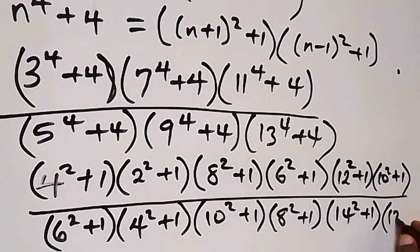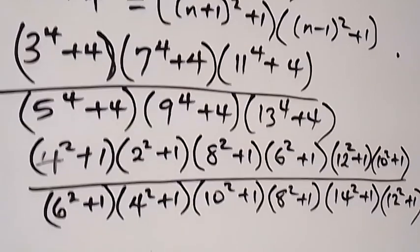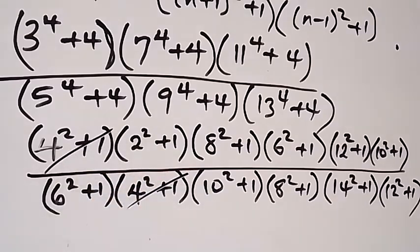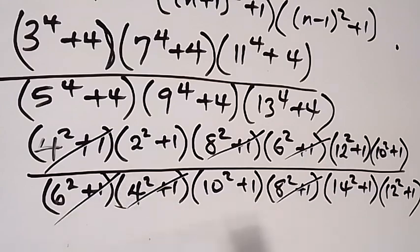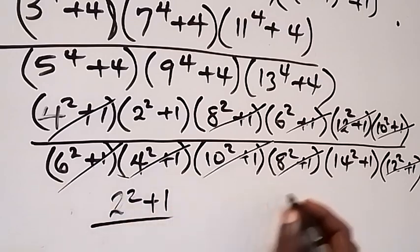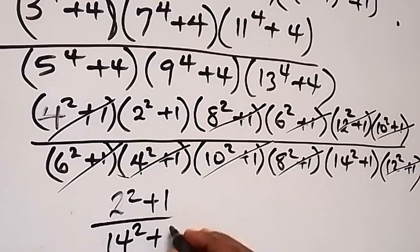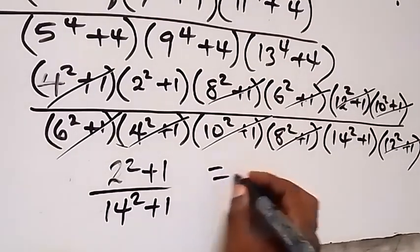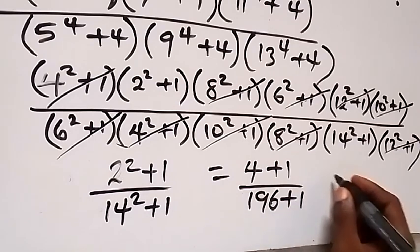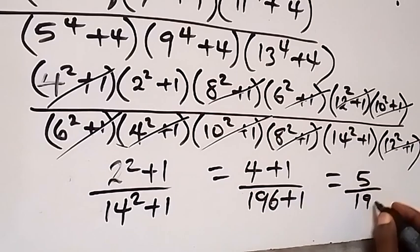Now we see that many terms cancel: 4² + 1 cancels, 8² + 1 cancels, 6² + 1 cancels, 12² + 1 cancels, and 10² + 1 cancels. What remains in the numerator is 2² + 1, and in the denominator is 14² + 1. That gives us (4 + 1) divided by (196 + 1), which equals 5 over 197.